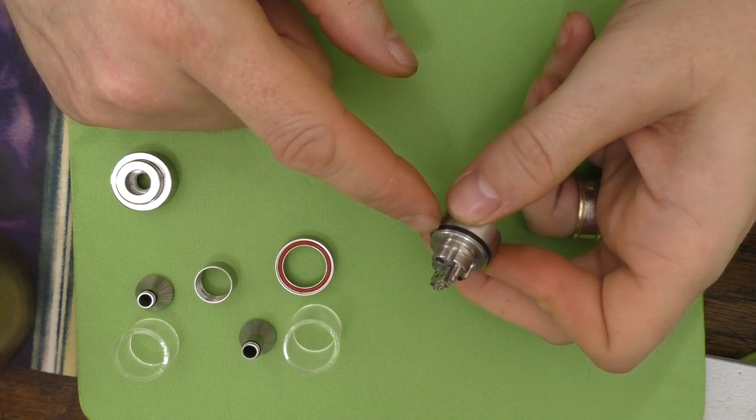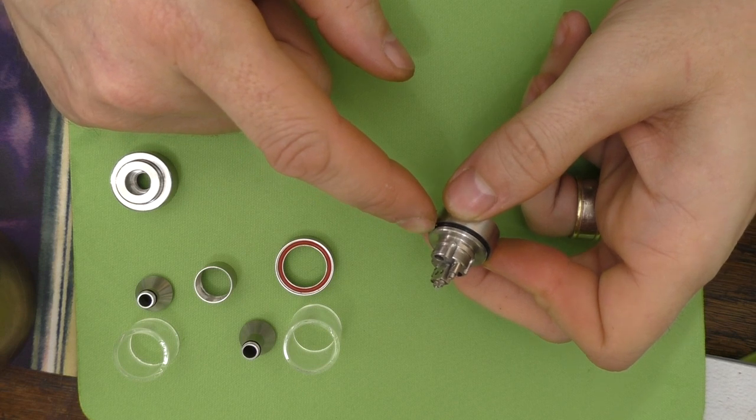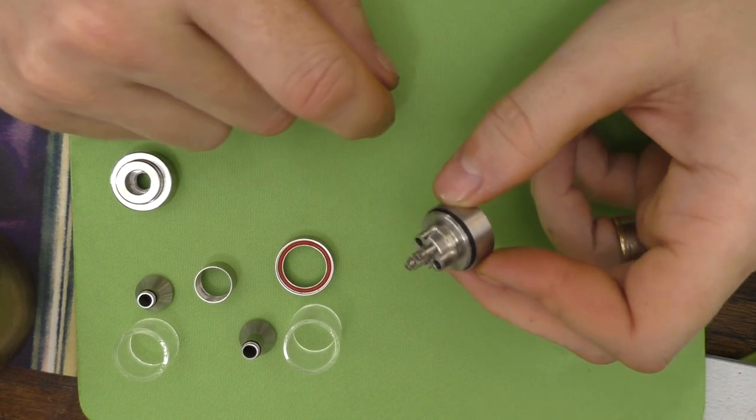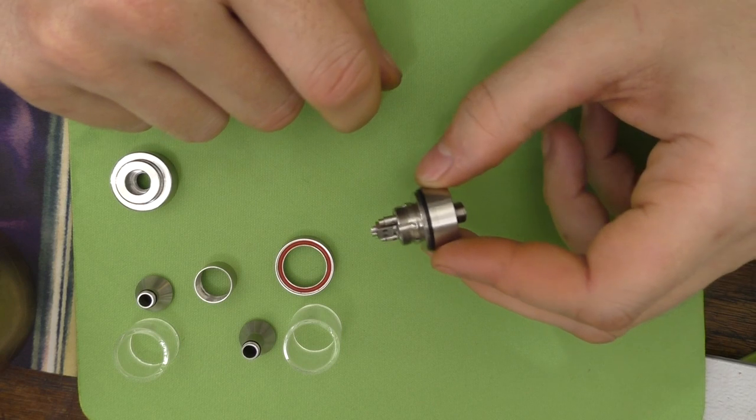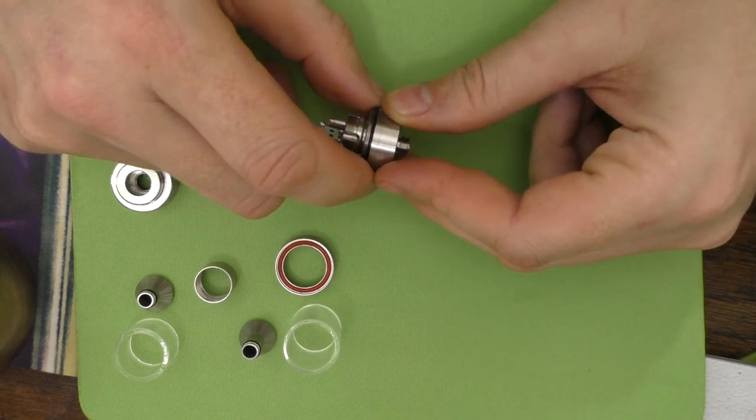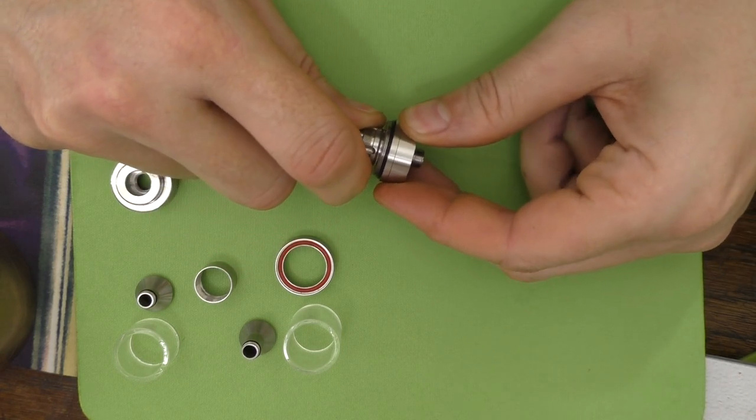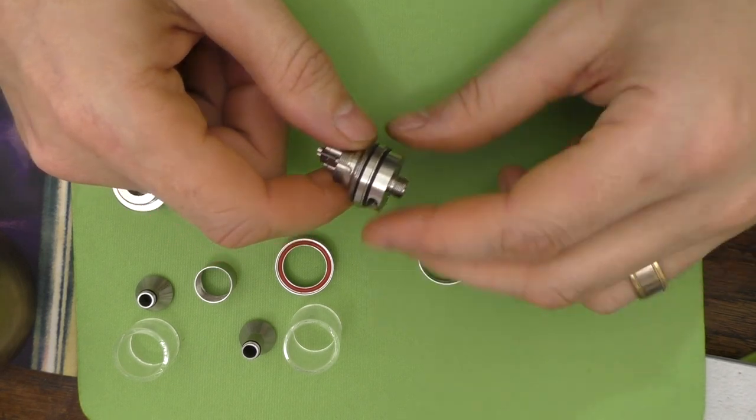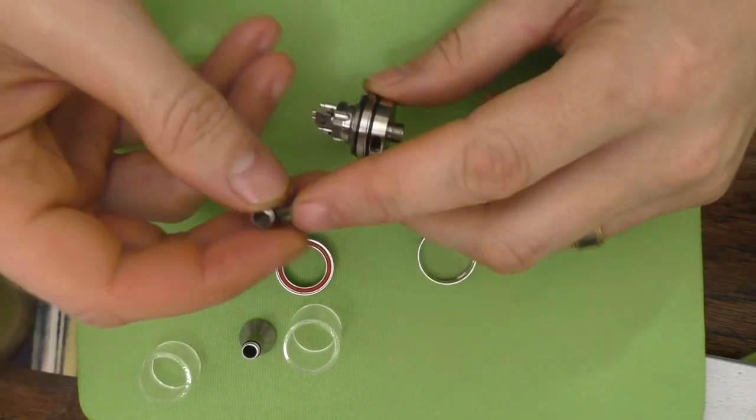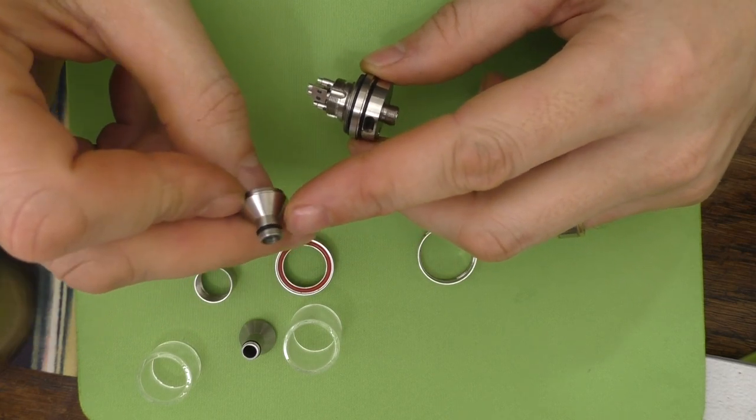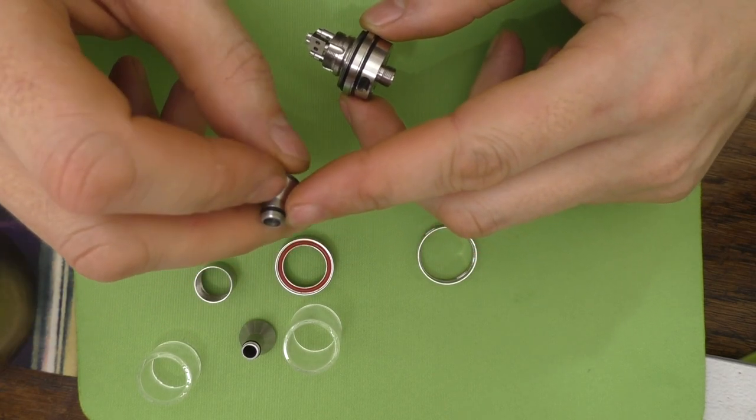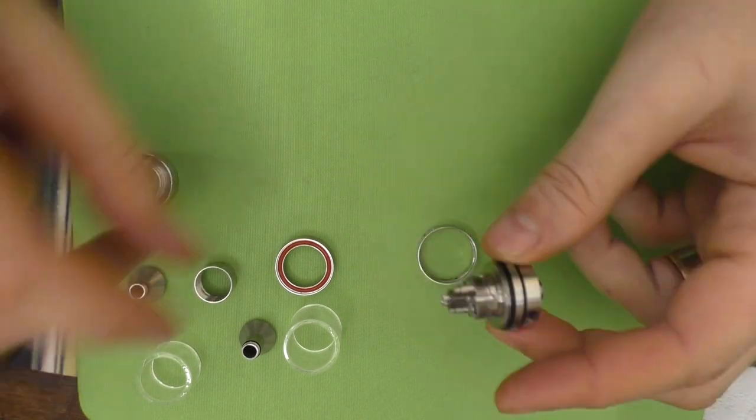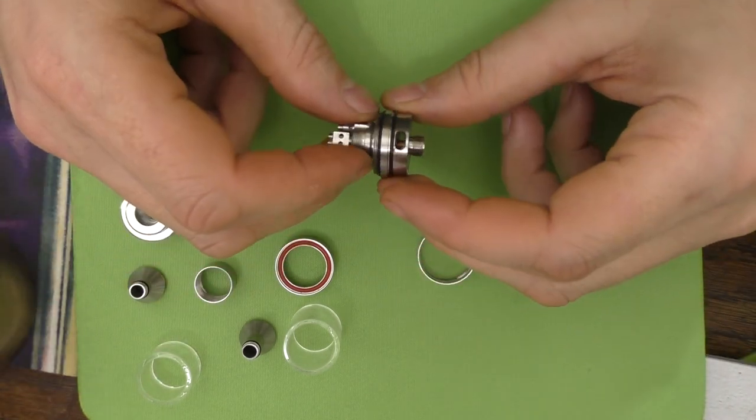But I've tried multiple different... I've got a Kayfun V4 and I've got an Orchid V4, both of which use the same threading. But I can't make any combination of pieces fit, so you can't swap pieces around. The threading on the top of the chimney here is different than the threading on the top of the Kayfun V4.